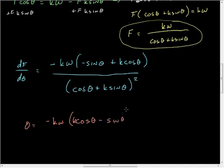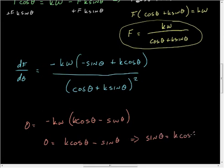And now from here I can divide through by negative K W, so I get zero is equal to K cosine theta minus sine theta. This implies that sine of theta is equal to K cosine of theta, which means that tangent, if I divide by cosine both sides, tangent theta is K.